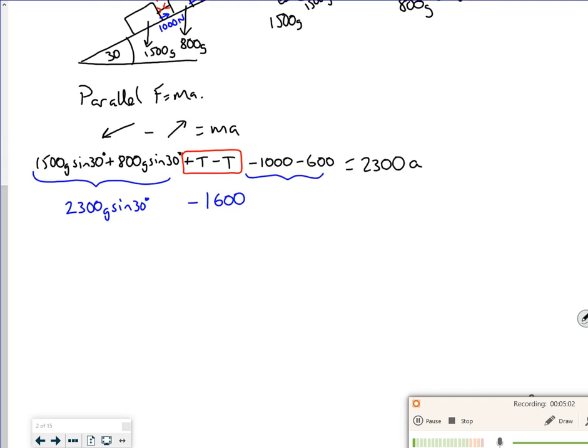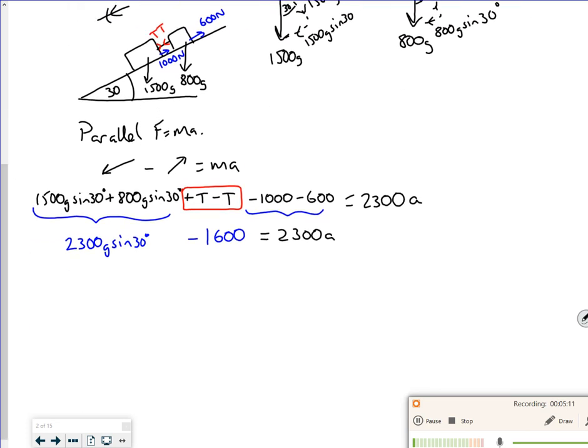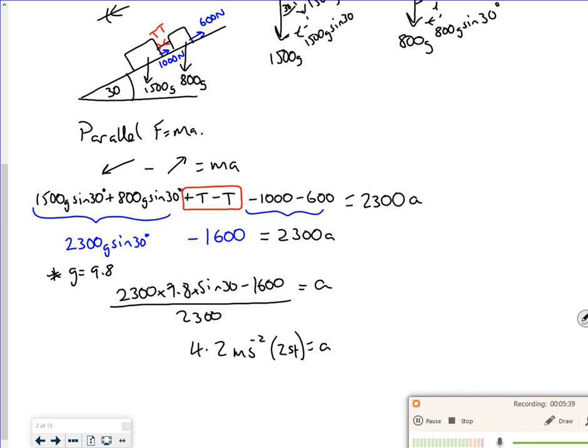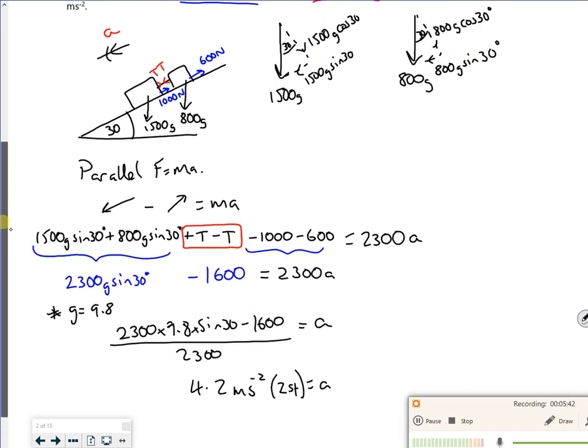So the T's disappear. So all I've got here now is 2300g sin 30. So if I work out g as 9.8, I've got 2300 times 9.8 times sin 30 minus 1600 all over 2300. It's going to be an a value. Now the a value, you don't always write down a better value and then write down your rounded ones, but then just put the rounded one down. So that's 4.2 m/s² acceleration there. So that's that first bit working out the acceleration.